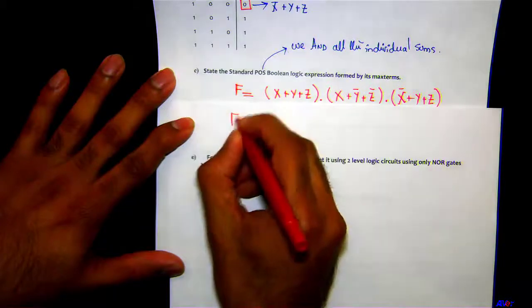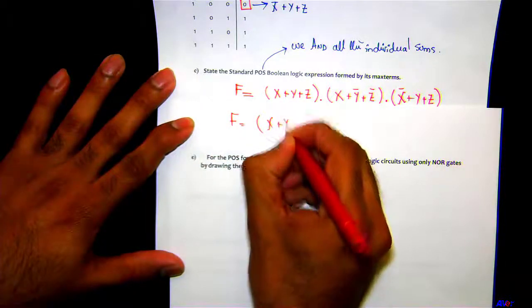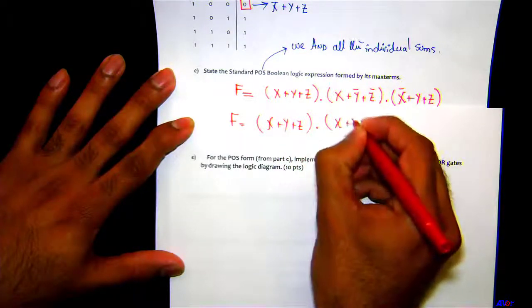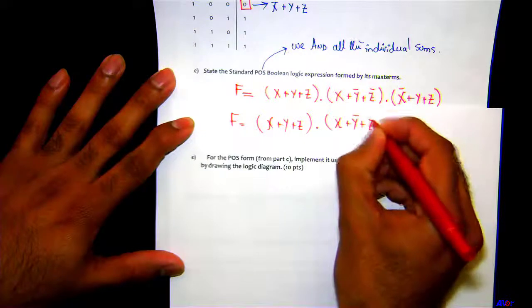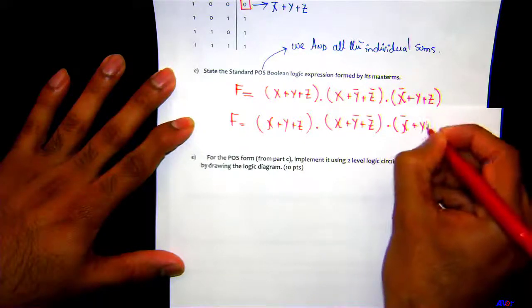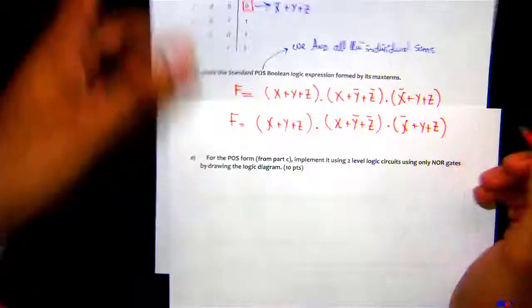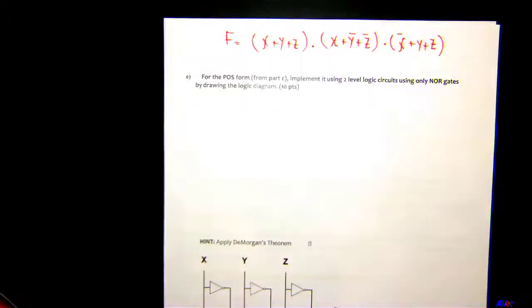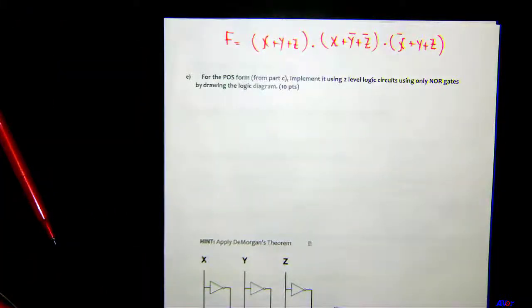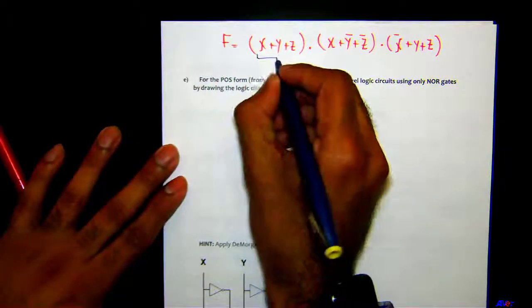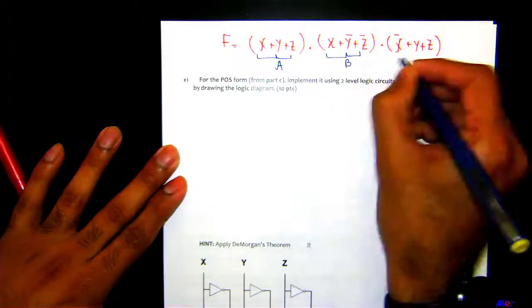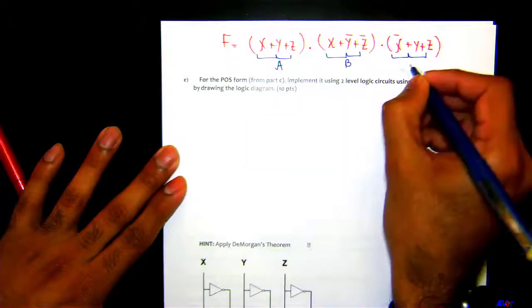So let me write this right here: X+Y+Z, X+Y̅+Z̅, and then X̅+Y+Z. Okay, now like we usually do in the class, we're just going to make it simple. Say this is A, B—so this is A, this is B, and this is C right here.